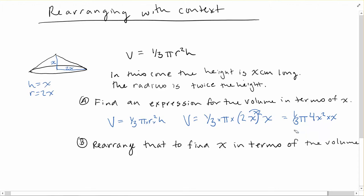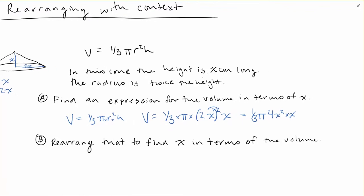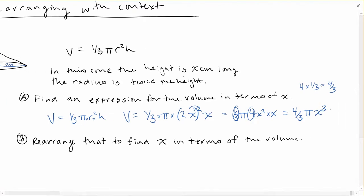I'll write this out over here. Is equal to, well, we have a 4 and a one-third. 4 times one-third, we can write as 4 over 3. So 4 over 3 pi. So 4 thirds pi x cubed is equal to the volume that we're looking for. So that would be our expression for volume in terms of x. So again, there's no r, no h in there anymore. We've just got it in terms of x.